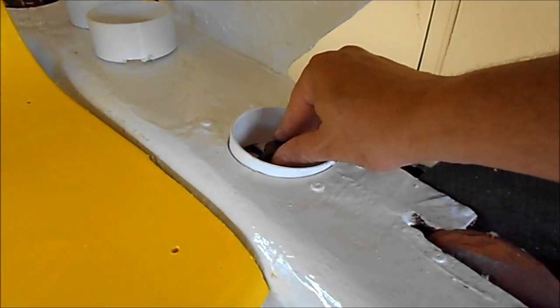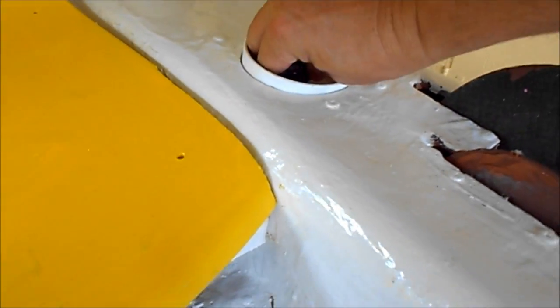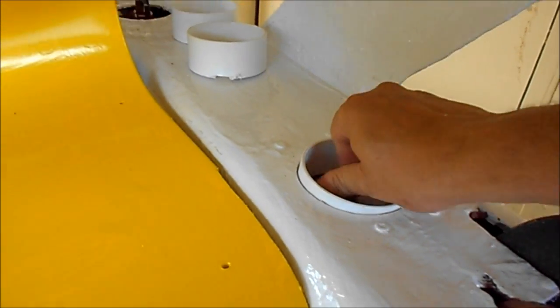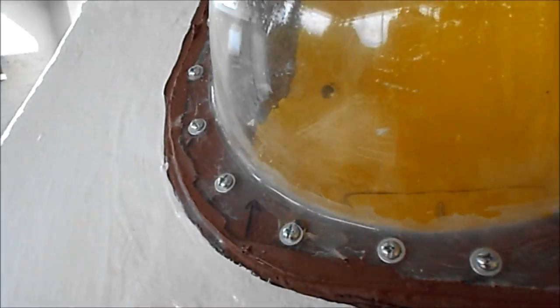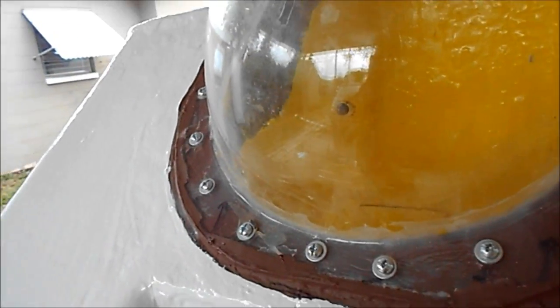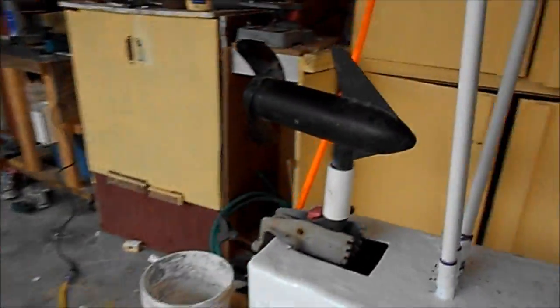This one right here is for the main ballast tank. I'll just turn it and you'll hear the air going into the main ballast tank. There's this tube right here in the back. That goes to the hose that controls the water level, and that's it.